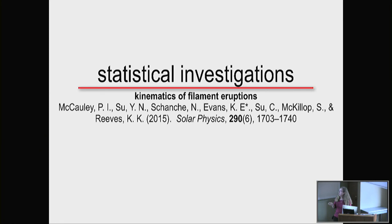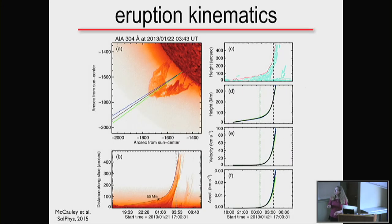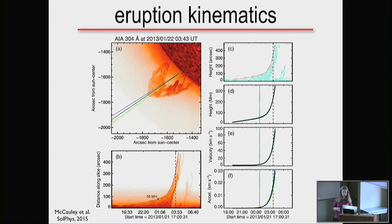The first topic is kinematics of filament eruptions, mostly done by Patrick McCauley with contributions from Caitlin Evans' REU project. For eruptions at the limb, you can build up a profile of how the eruption happens by taking a slice and watching: you typically get a slow onset and then a fast velocity as the eruption finally happens. The parameters cataloged include the height at onset, the slow rise speed, and the fast rise speed.